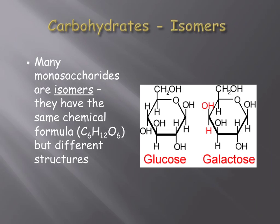You will see the prefix iso many times throughout the year, such as the terms isotope and isotonic, and you may be familiar with other uses of the term, such as an isosceles triangle, where two sides are the same length. Two monosaccharides that are isomers are shown in the picture to the right. Glucose and galactose both contain the same number of the same elements, but the OH and H have switched orientations — such a seemingly small change is actually quite significant.